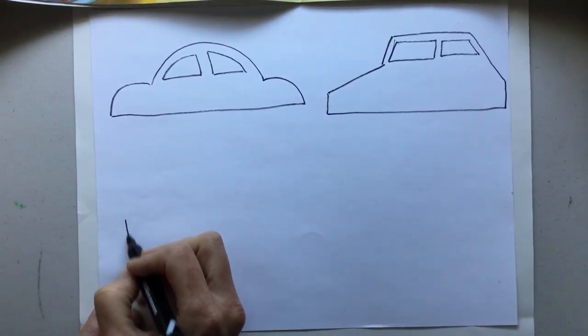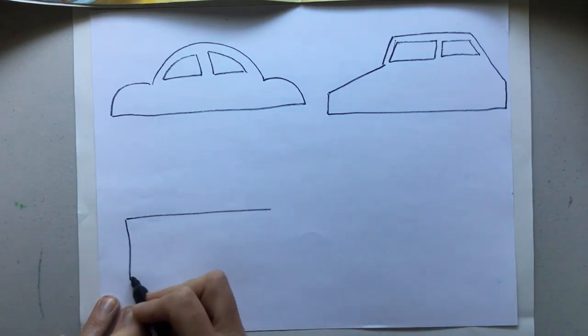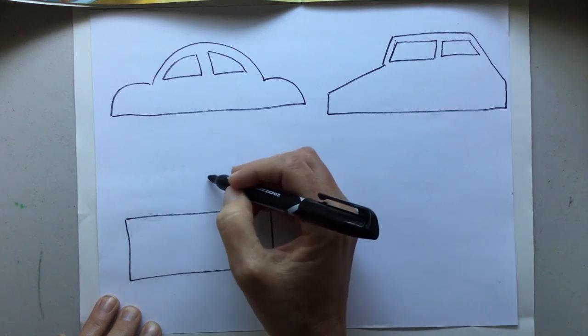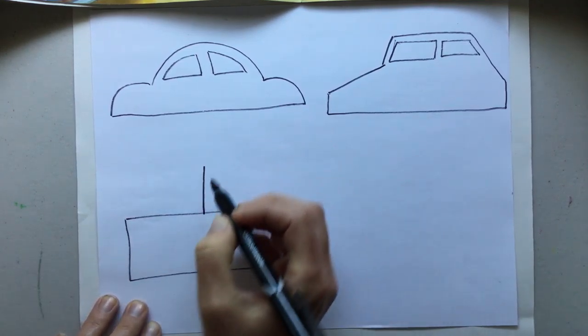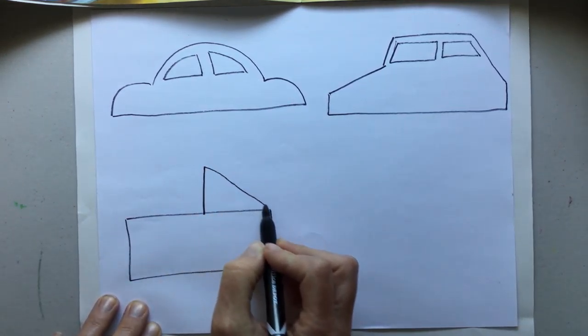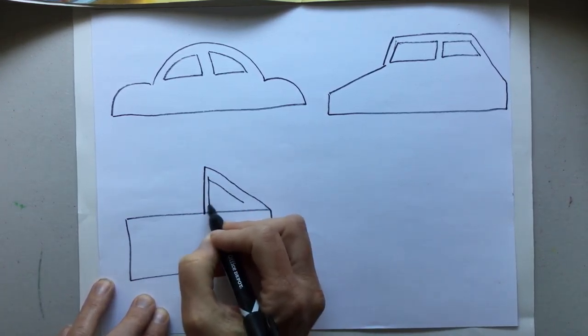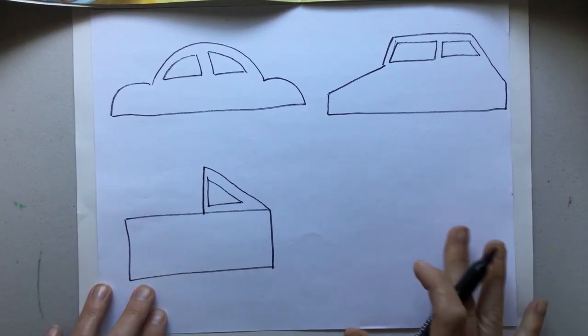So I made a diagonal line, diagonal line, horizontal line, and another diagonal. And then I just added a box to the bottom. And for this one, I would probably make my windshield kind of pointed as well. Maybe a front window and a back window.